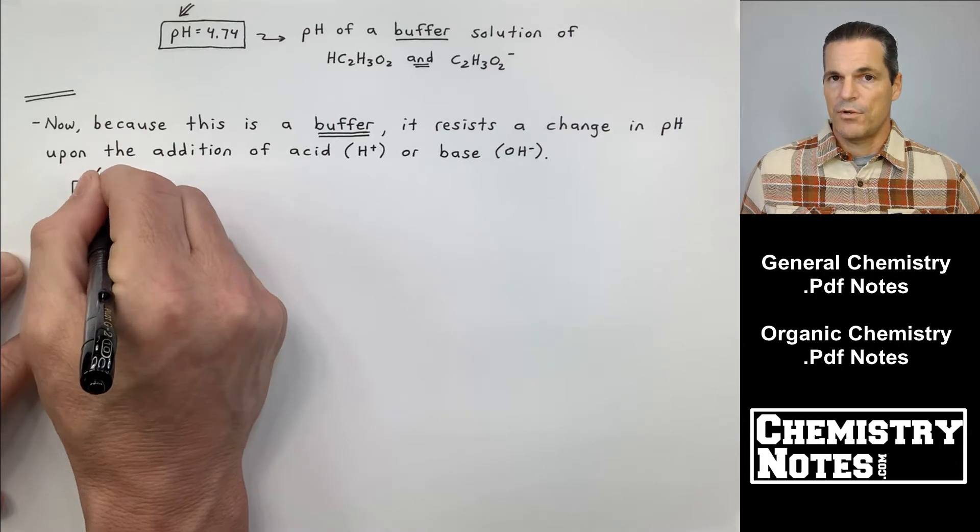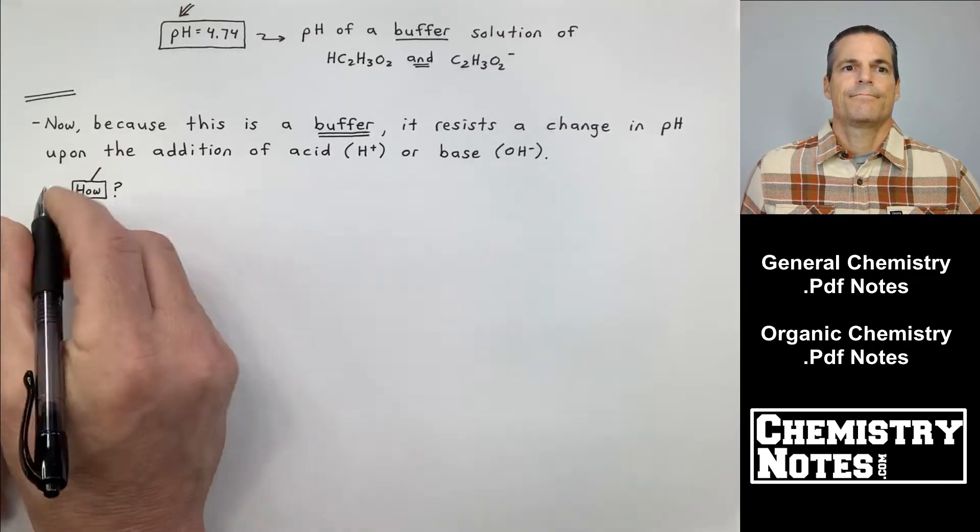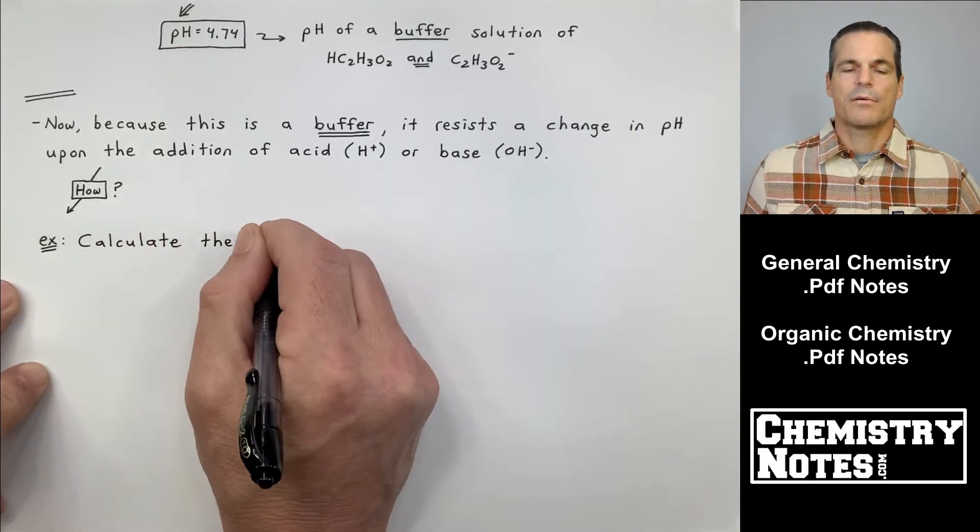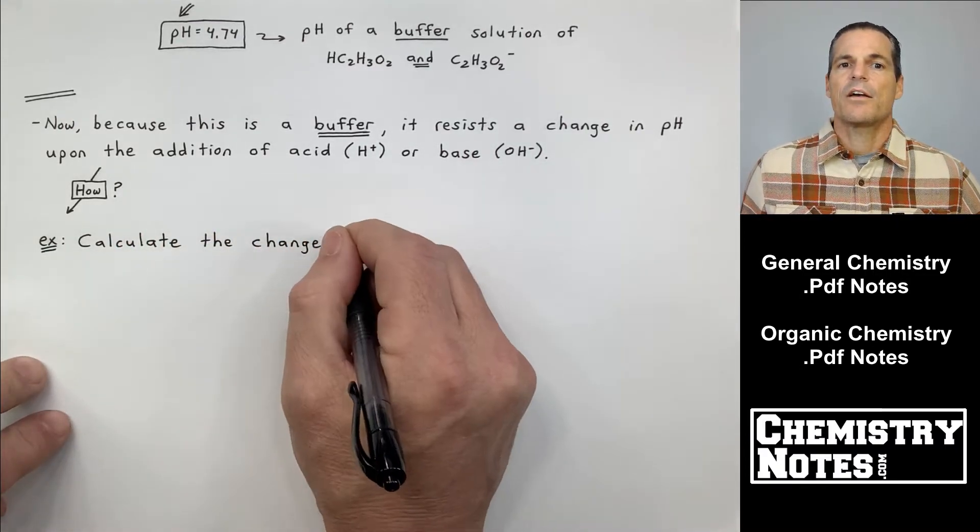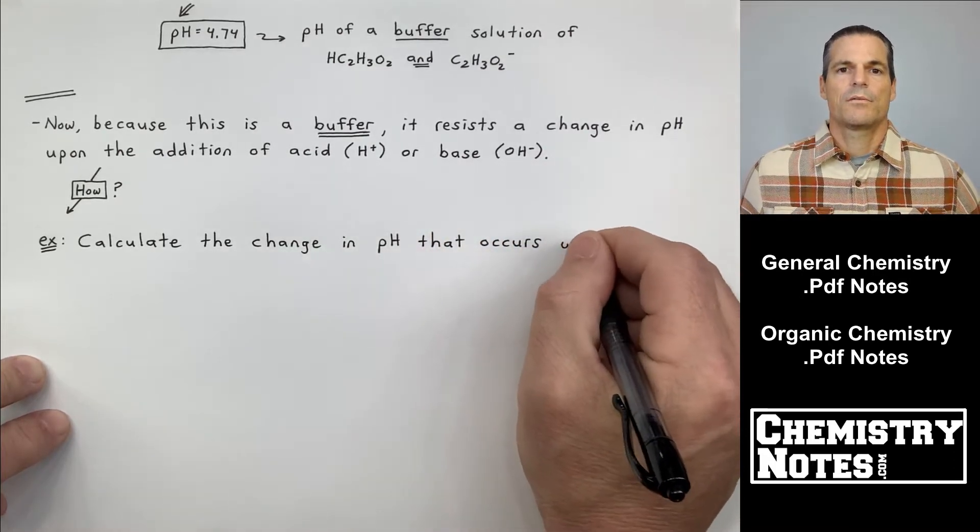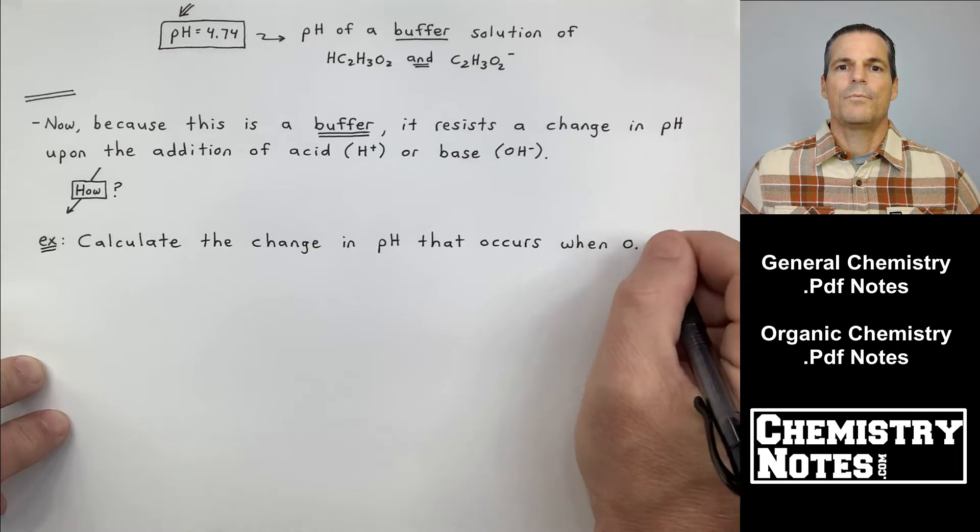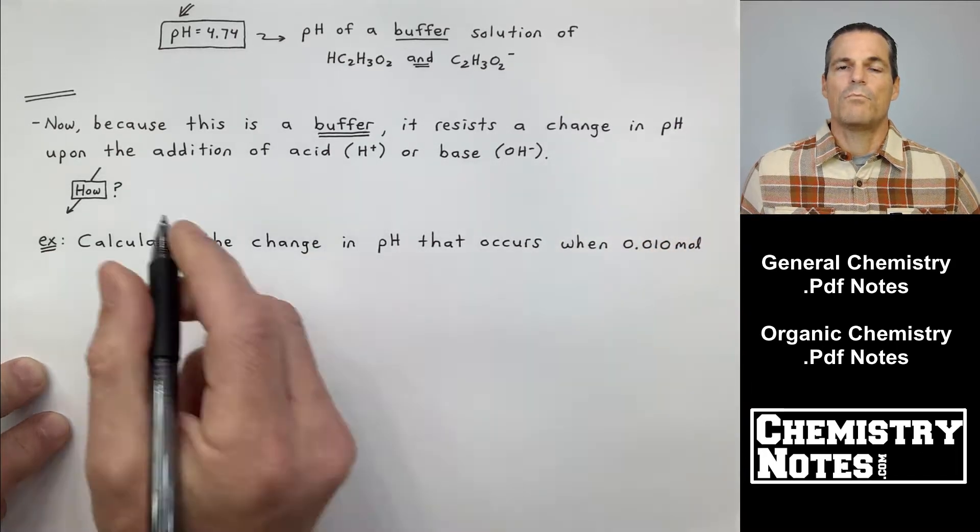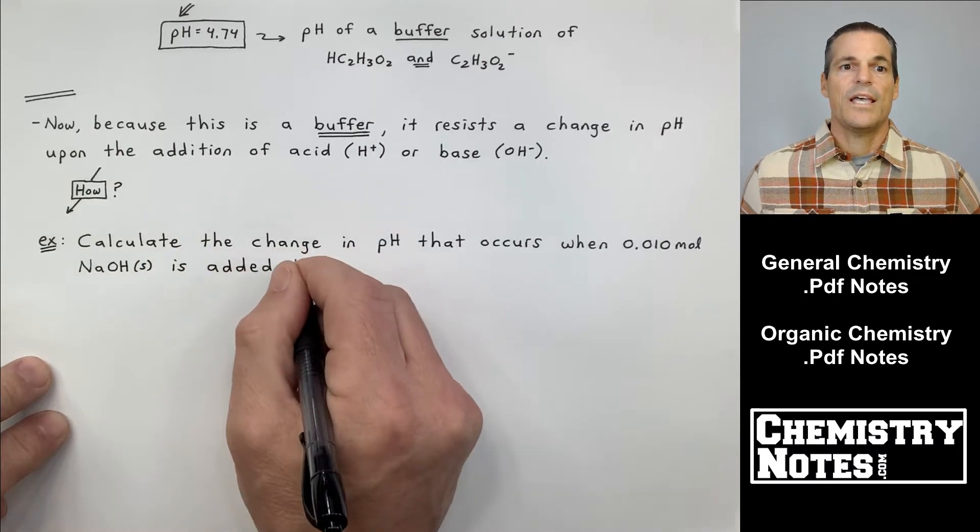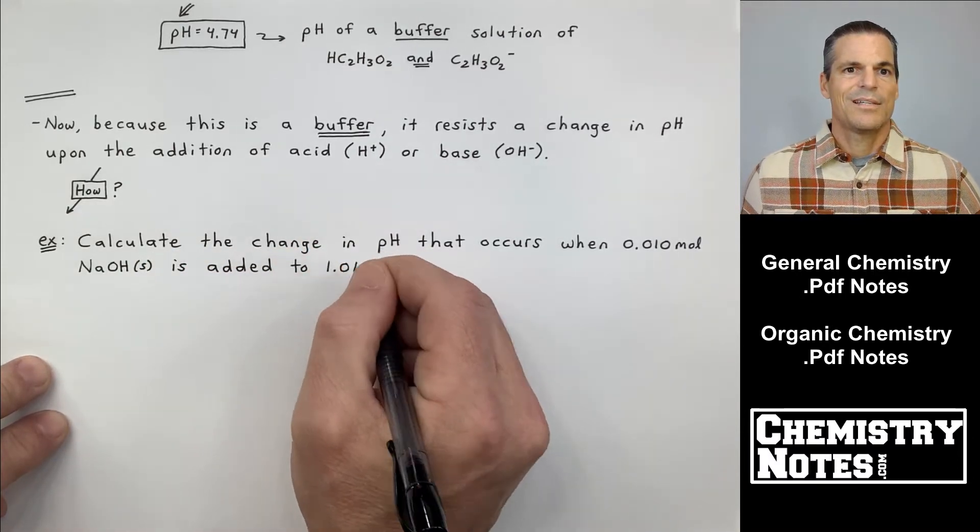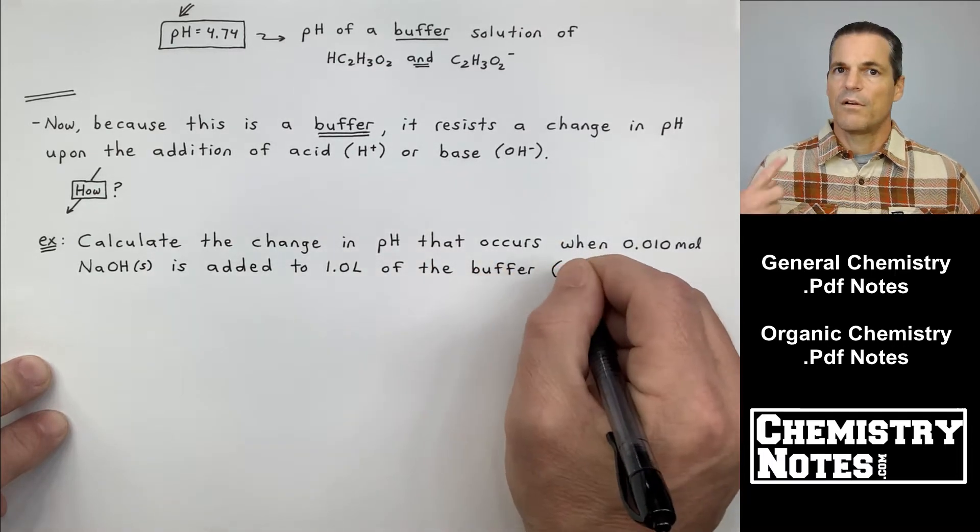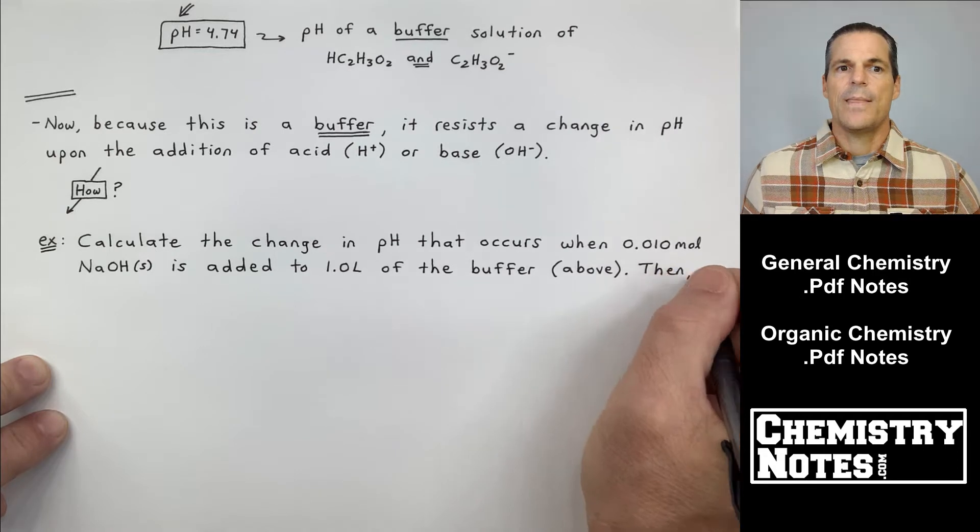All right. How does this happen? Well, I'm going to show you with the following example. Now, this example builds off of the one we just completed. It says, calculate the change in pH that occurs when 0.010 moles, that's an amount of something, 0.010 moles, NaOH solid is added to 1.0 liter of the buffer from above, from the last problem. Now, NaOH, that breaks up completely in the Na+, neutral.